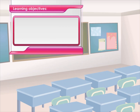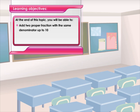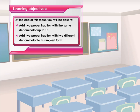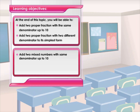Learning Objectives. At the end of this topic, you will be able to: add two proper fractions with the same denominator up to 10; add two proper fractions with two different denominators to its simplest form; add two mixed numbers with the same denominator up to 10; and add two mixed numbers with different denominators up to 10.